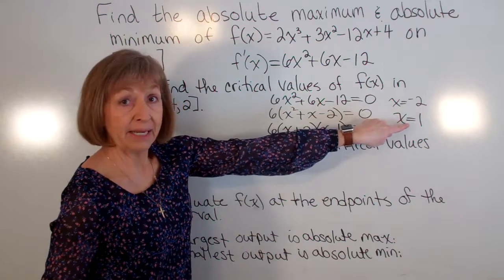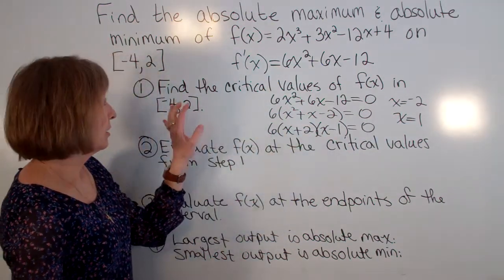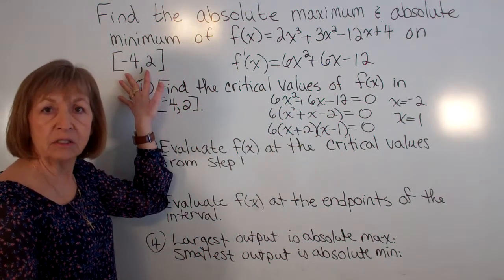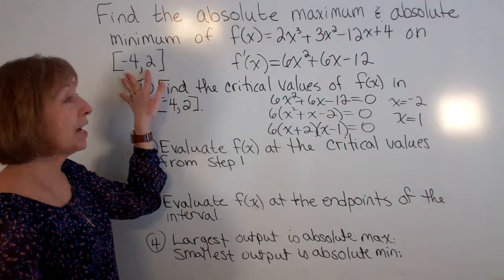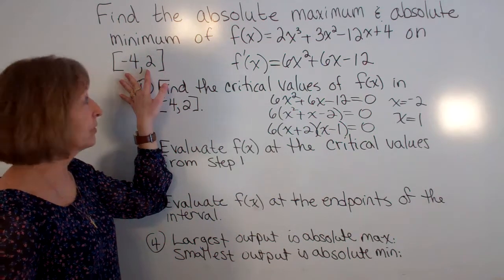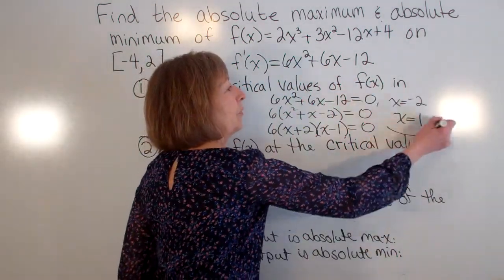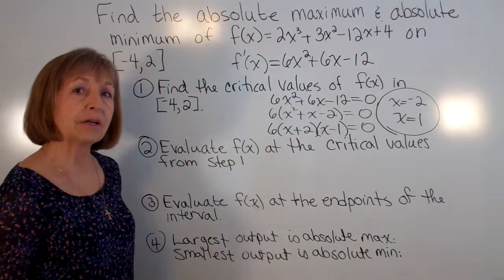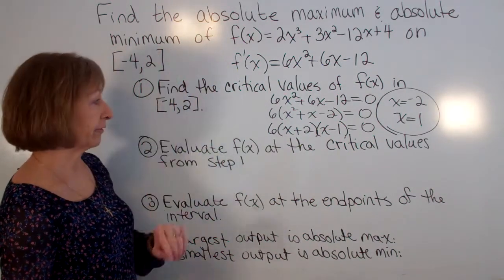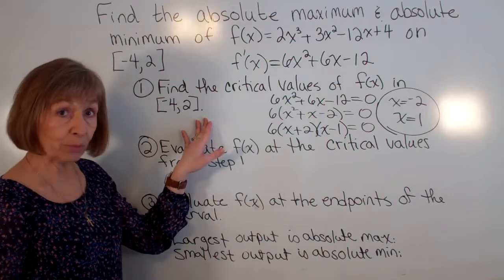Now I compare these and make sure they're in my interval. All right so -2 is in the span of numbers from -4 to 2. 1 is also in the span of numbers from -4 to 2. So I'll be able to use both of those critical values because they are in the interval that we're interested in. Okay so that was step 1.